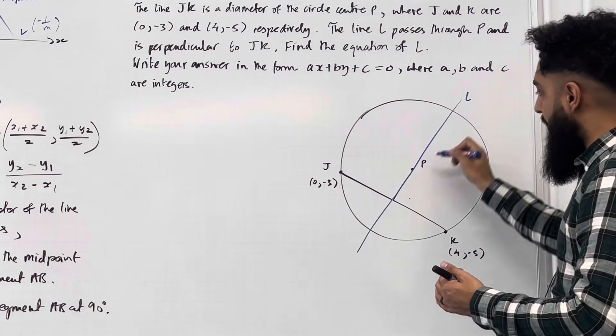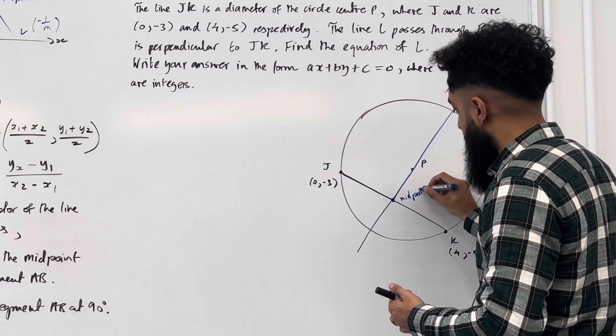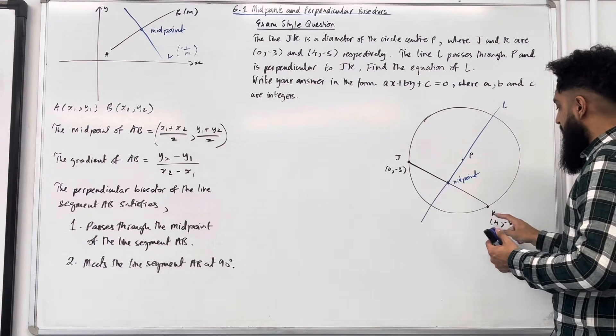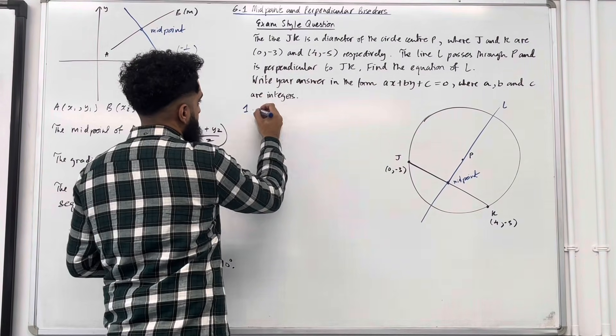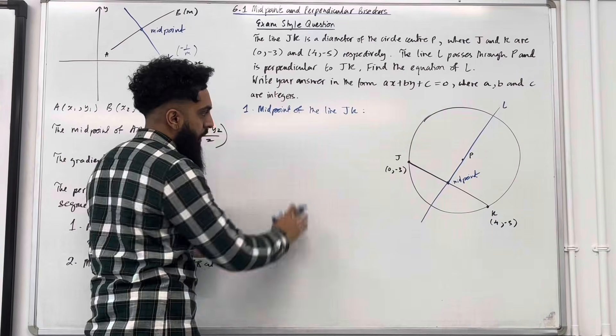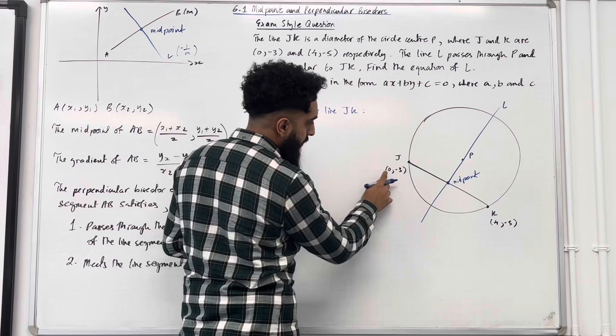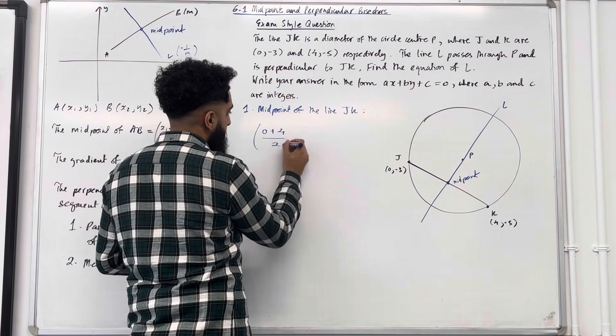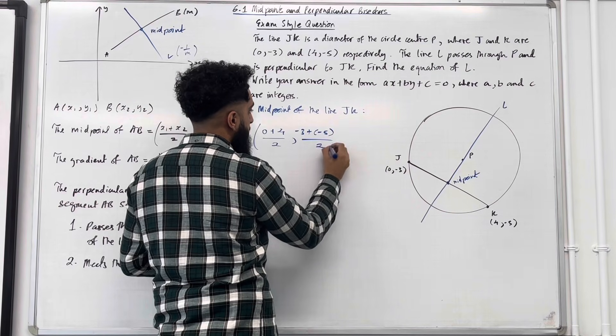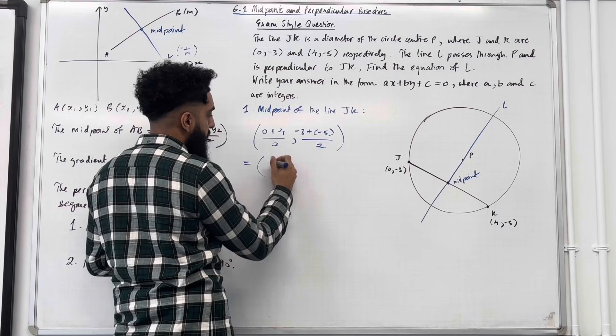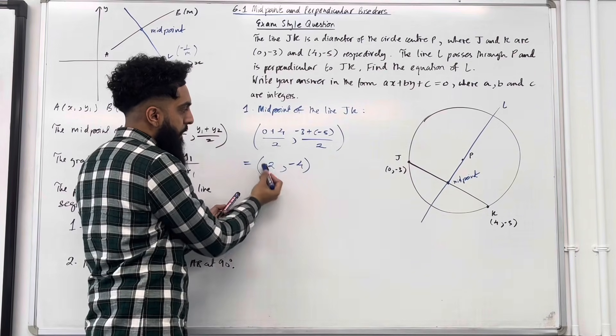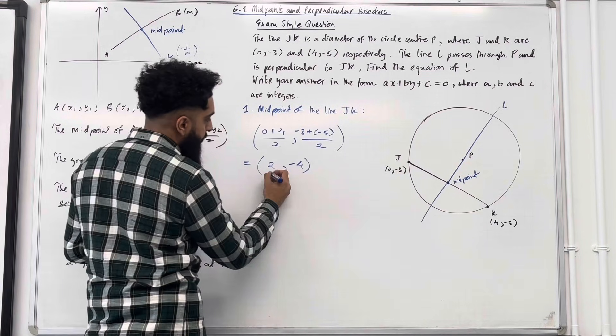Firstly, we notice that by definition, the line L will pass through the midpoint. We're using the definition of a perpendicular bisector. Step number one, I'm going to find the midpoint of the line JK. I take my x-coordinates, add them together, divide by 2. So 0 plus 4, divide by 2. Take my y-coordinates, add them together, divide by 2. So minus 3 plus minus 5, divide by 2. That would be 4 divided by 2, which is 2, and that would be minus 8 divided by 2, which is minus 4. The line L passes through the midpoint, which is this coordinate. I'm going to call this coordinate x1, y1.